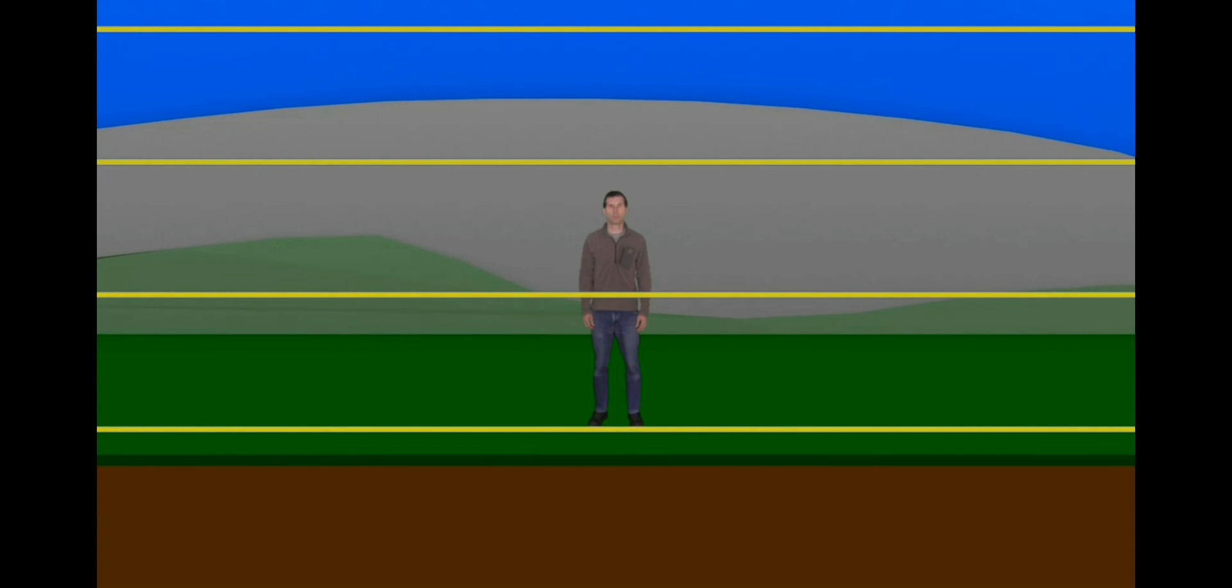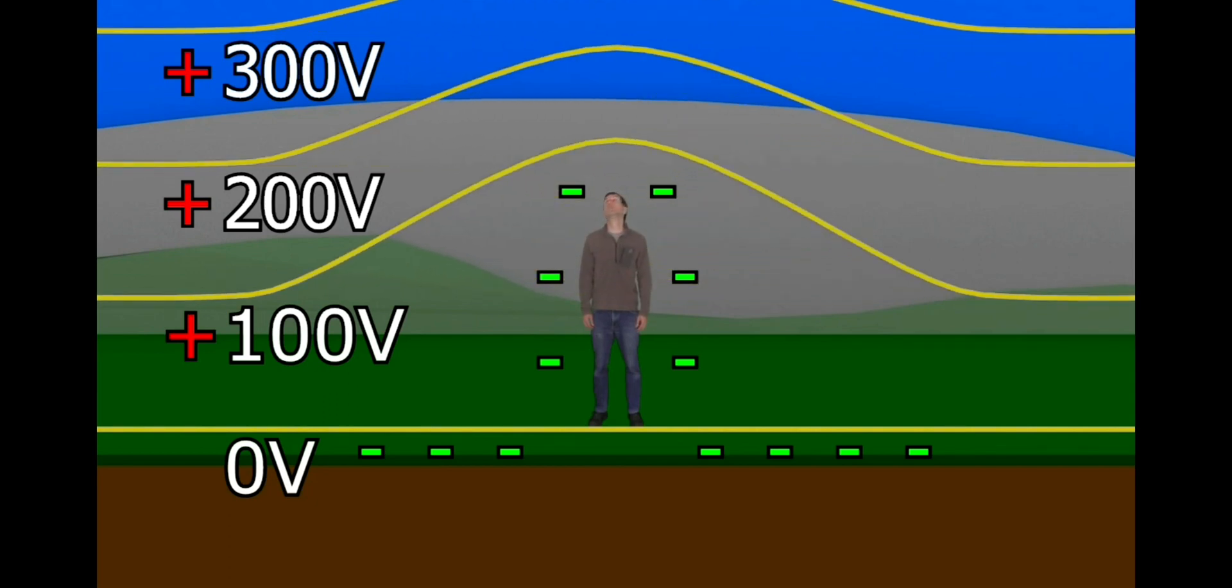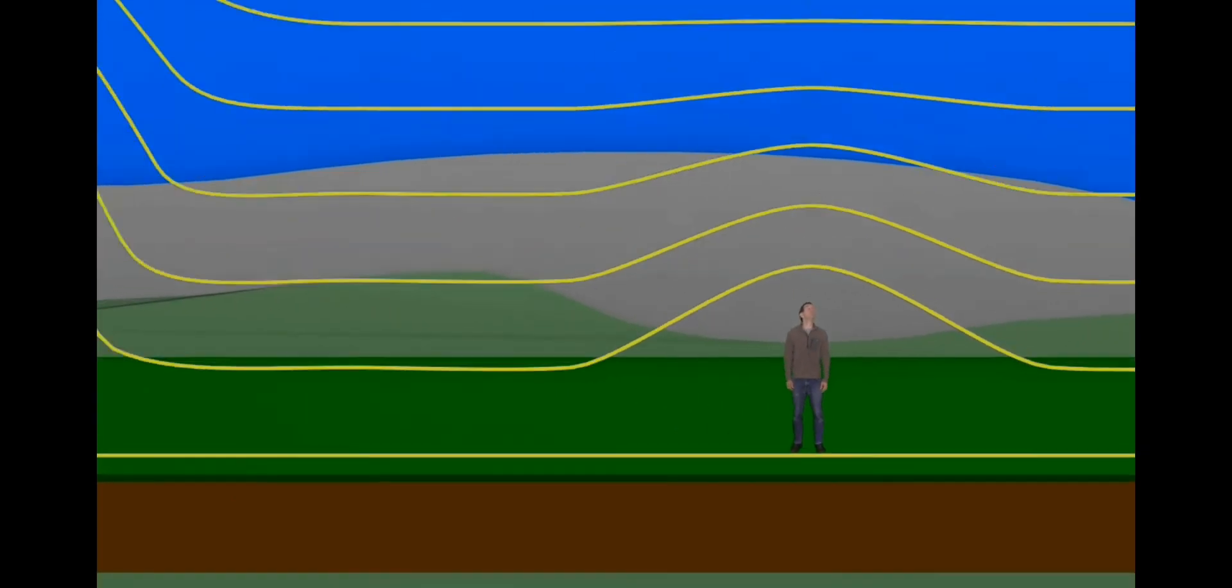If this voltage exists between your head and the ground, why don't you get a shock? The reason is that your body is a good enough electrical conductor that standing on the ground, you're basically a part of the ground. The equipotential lines would look like this. There's still effectively zero volts between the top of your head and ground. Similar effects happen with trees, buildings, and so on.